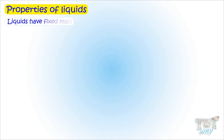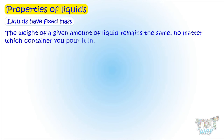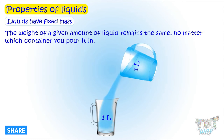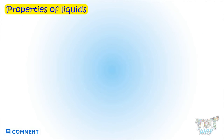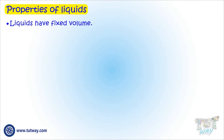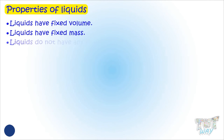Liquids also have fixed mass. The weight of a given amount of liquid remains the same no matter which container you pour it into. If you have one liter of any liquid, it will remain one liter of liquid no matter in which container you pour it. So we learned that liquids have fixed volume and fixed mass, but not a fixed shape.